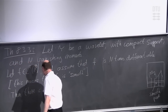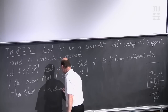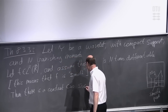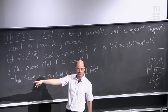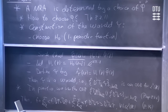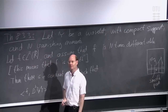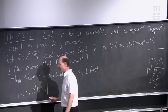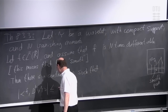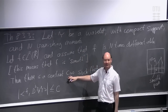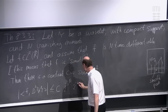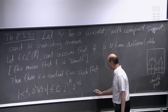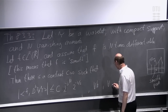Then the result says there is a positive constant C such that the absolute value of the inner product of f with d to the power j t_k psi is less than or equal to C times 2 to the minus jn times 2 to the minus j divided by 2. This holds for all values of j greater than or equal to 1.